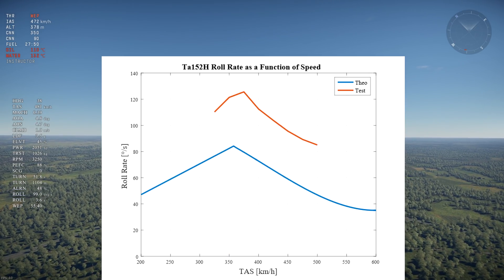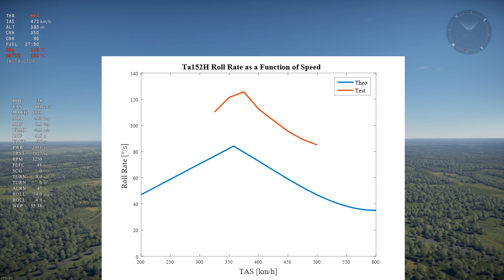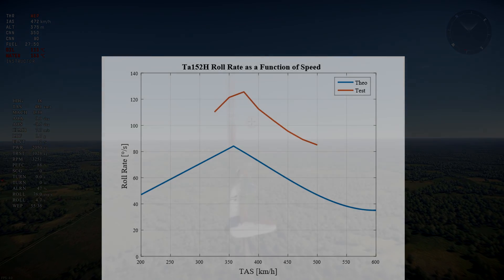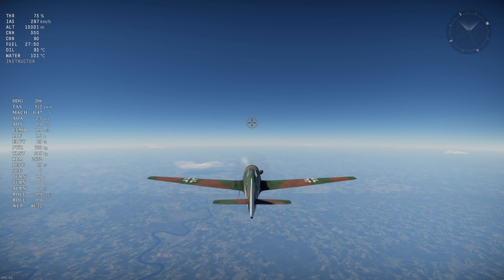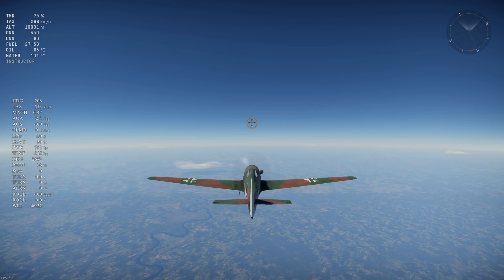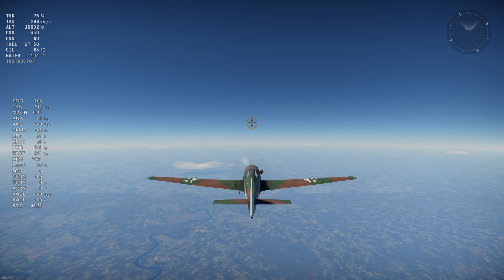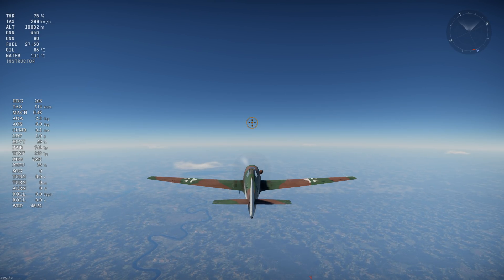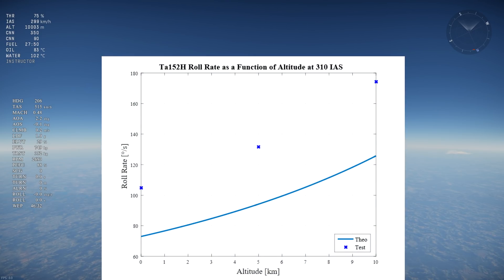Different aircraft will have different control stiffening speeds and that's what makes the handling good or bad at high speed. Another effect of roll rate being proportional to true airspeed is that for a constant IAS, roll rate increases as altitude increases. On this graph of TA152H roll rate as a function of altitude, roll rate increases exponentially with altitude. The points are test flight roll rates which follow the theoretical trend. Test roll rates are higher for the same reason given previously.